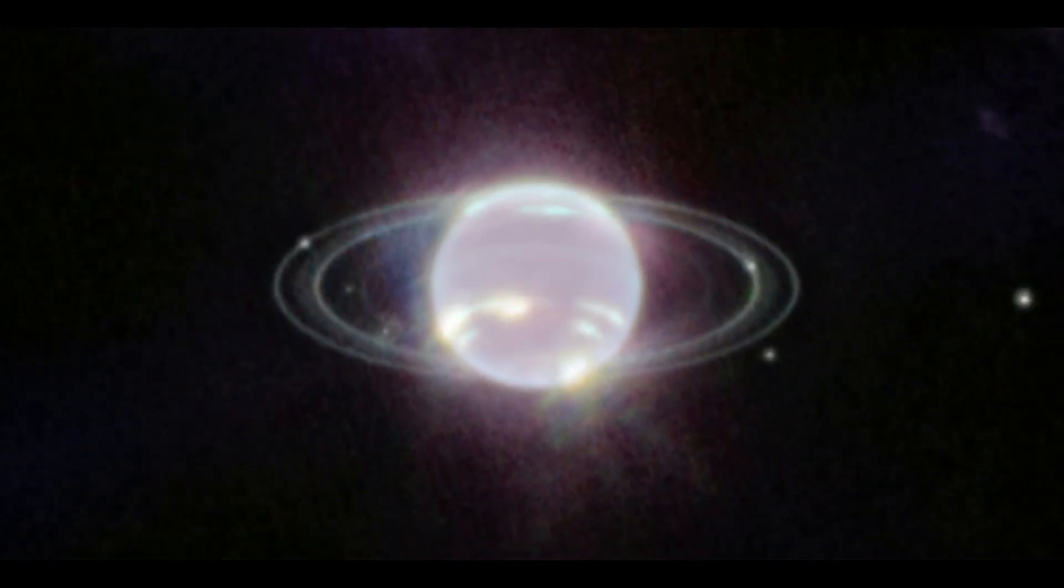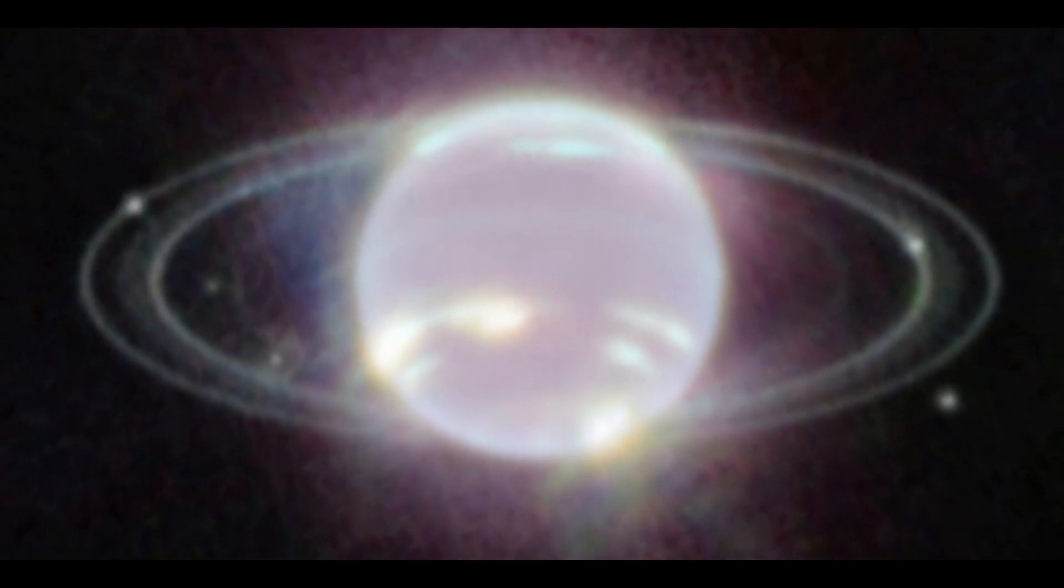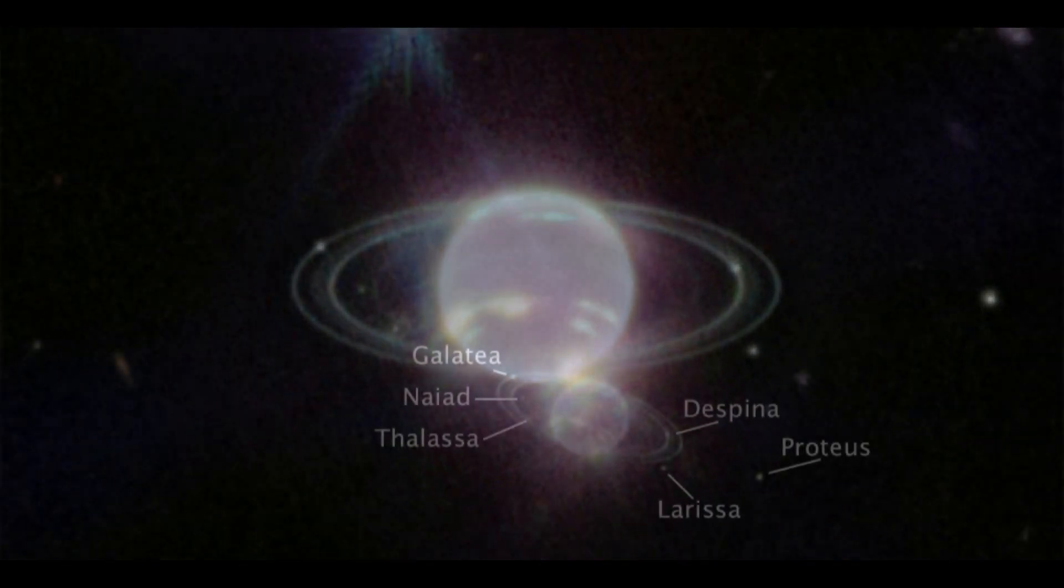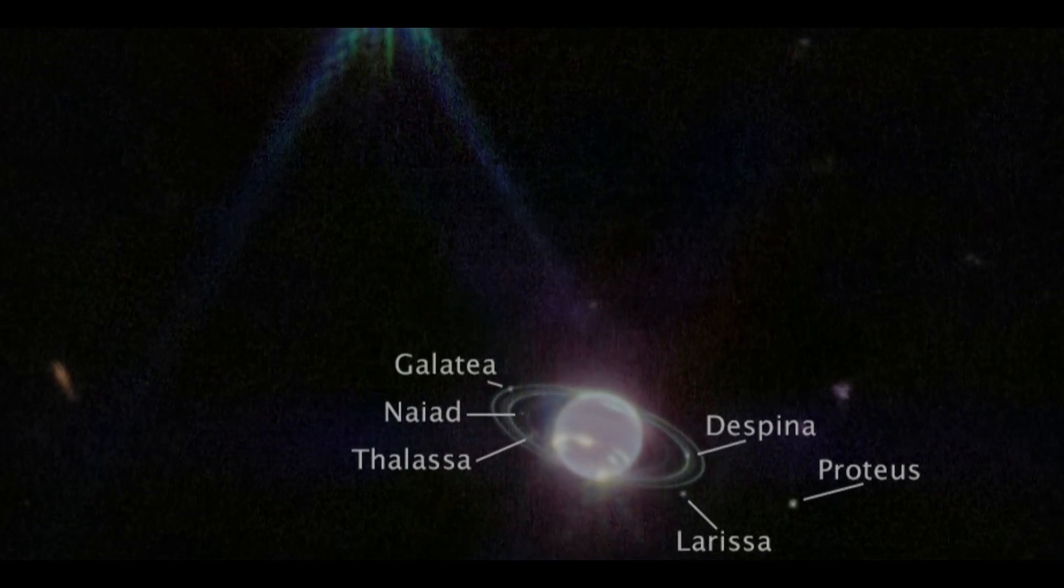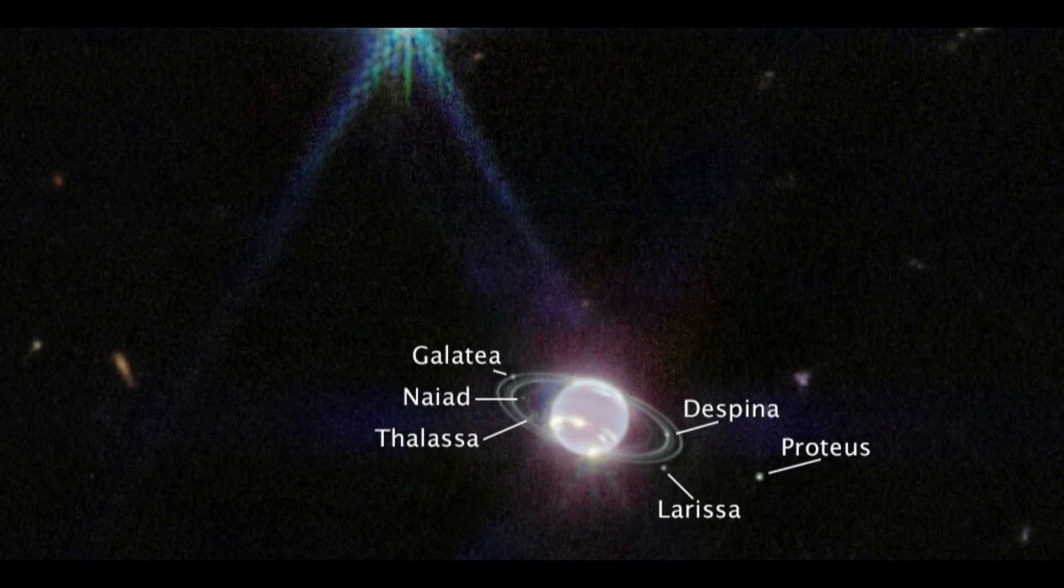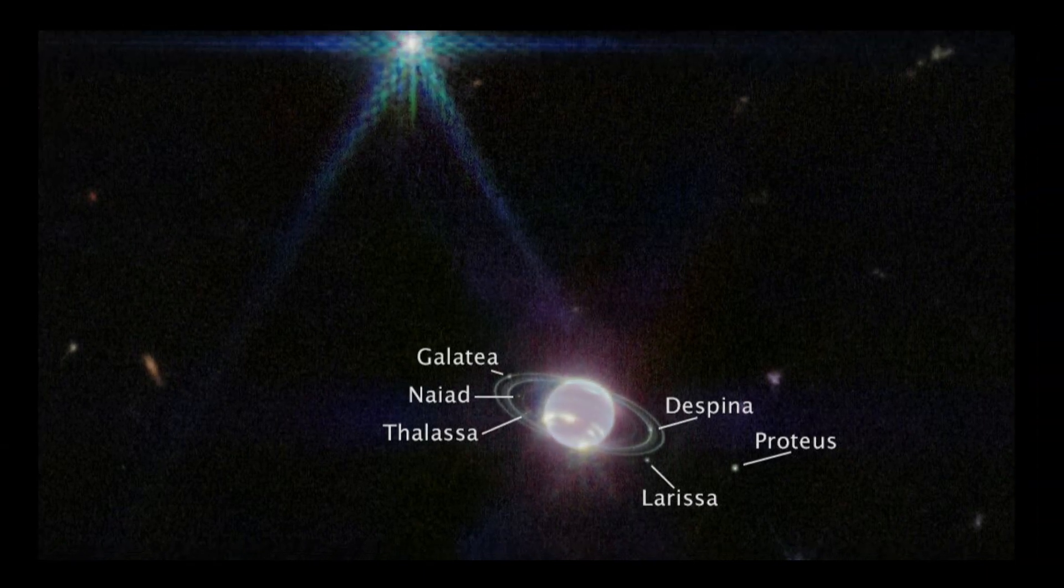The typical blue color that has come to be associated with the ice giant from Hubble Space Telescope pictures appears to be lacking from the JWST Neptune photograph. Because the JWST detects Neptune in near-infrared light, this blue tint, created by methane in the planet's atmosphere, is missing.